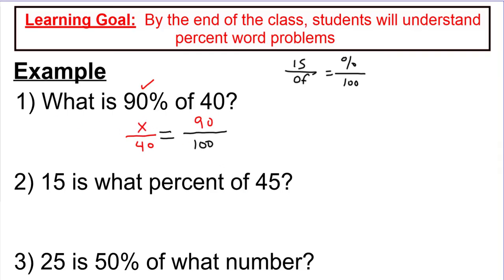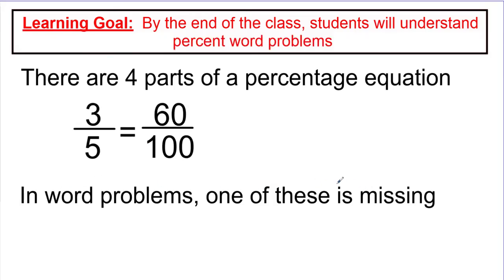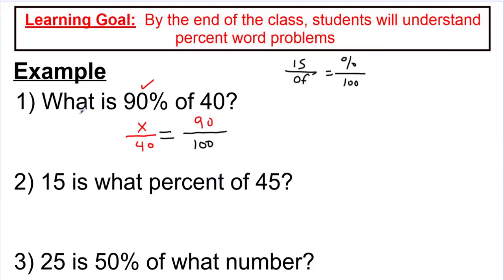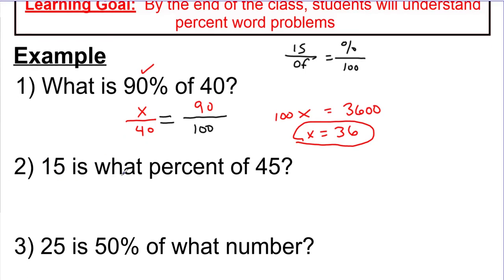So in this case, in word problems, one of these is missing. In this case, the is was the thing that we didn't know. So now we just have to solve this using cross-multiplying. I'm going to say 100 times x is 100x, and then 90 times 40 is 3,600. And if I do my division, I'm going to get 36. So they're saying if you take 90% of 40, you're going to get 36. So this is one type of word problem that you'll commonly see.